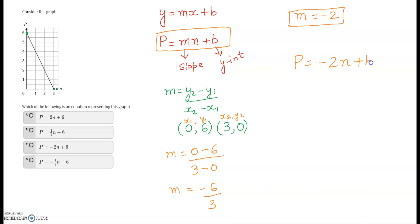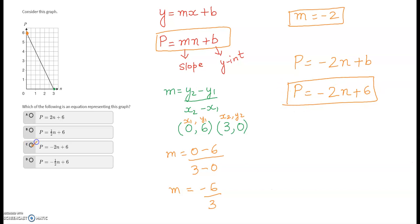Looking back at the graph, the line touches the y-axis at 6, so the y-intercept b equals 6. Therefore the answer is p equals negative 2n plus 6, and that is option C. Thanks for watching this video. Don't forget to subscribe and like my YouTube channel.